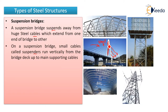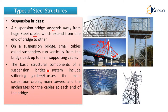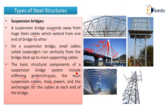The suspenders run vertically from the bridge deck to the main supporting cable, holding the bridge deck. The basic structural components of a suspension bridge include stiffeners, girders or trusses, the main suspension cable, main towers, and the anchorage for cables at each end of the bridge.